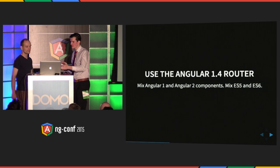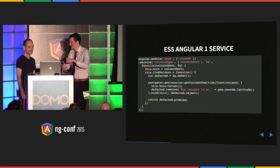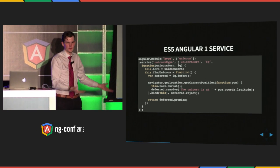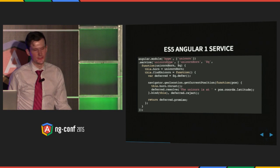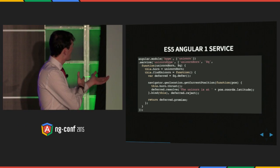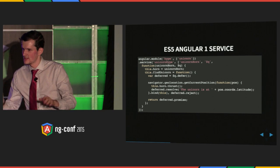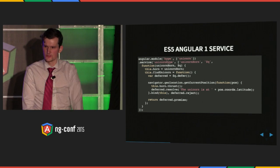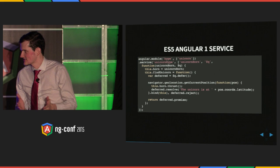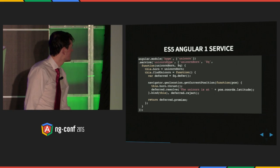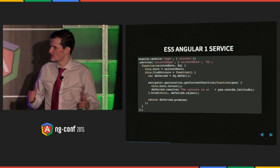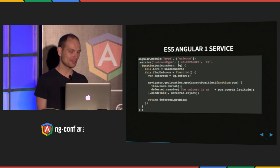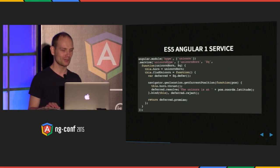I've got ES6, I've got Angular 2 — but what if I have an actual ES5 service? This is a really common use case, especially for enterprise clients. We've got this unicorn service: we find the unicorn, get its location, and resolve a promise. We're using this ES5-style promise, which won't translate to ES6 because it's completely different from how ES6 promises work. This code has a lot of problems — you have to bind 'this' because the binding is not propagated correctly.